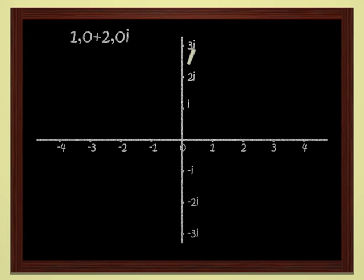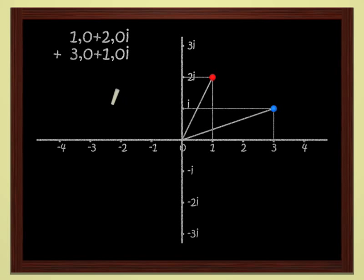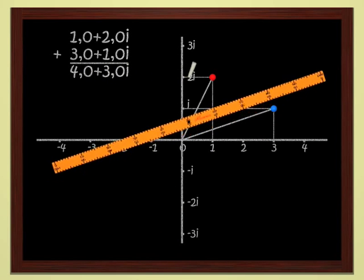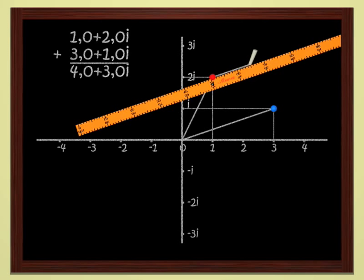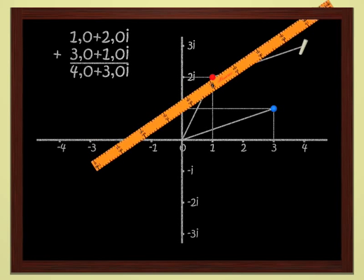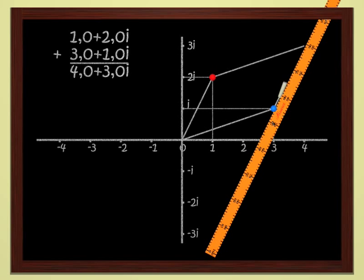These numbers can be added, just like usual numbers. Look at the red point, which is the point 1 plus 2i. Let's add 3 plus i, which is the blue point. Well, you add them just as school children do. That gives us 4 plus 3i. Geometrically, this is just addition of vectors. You see that it's no problem to add complex numbers.